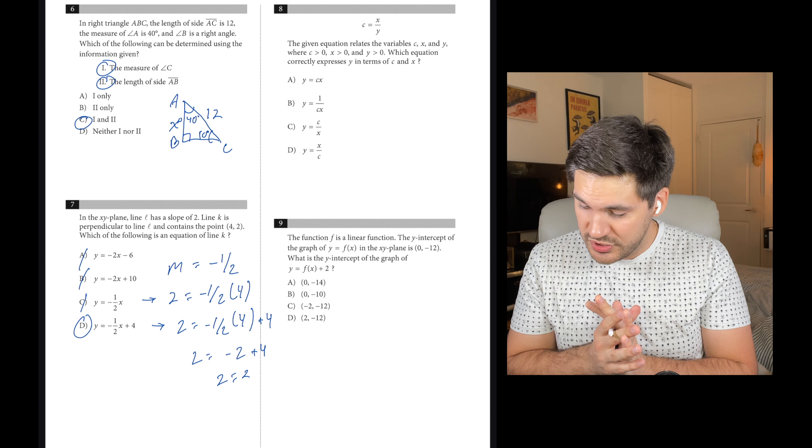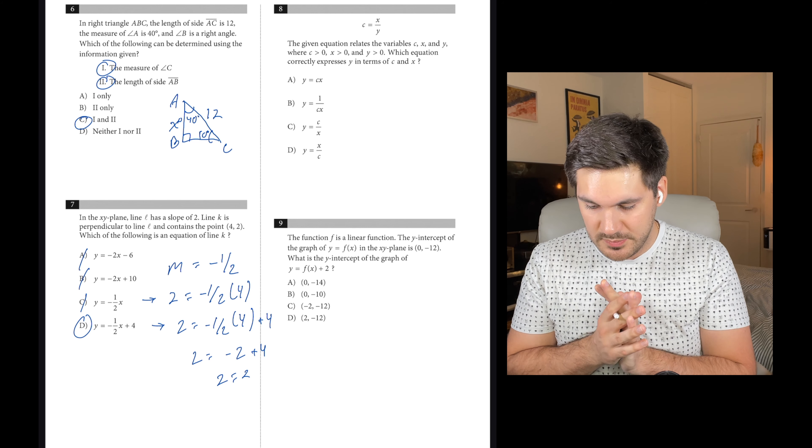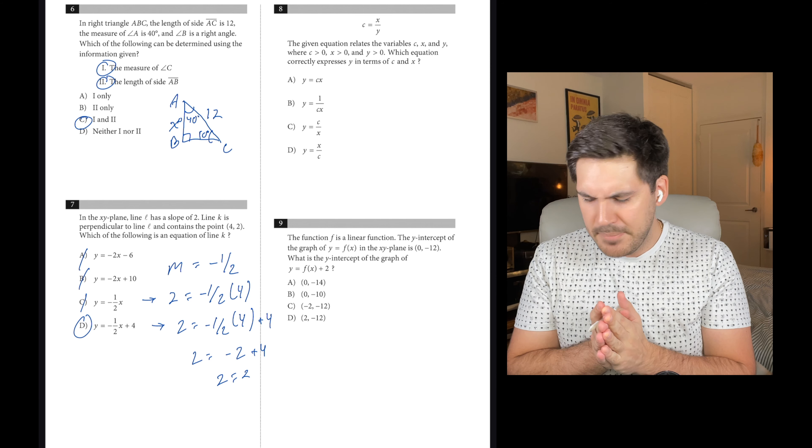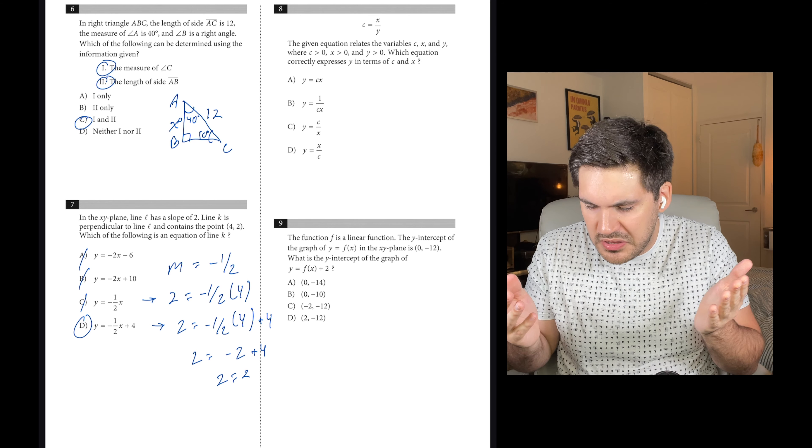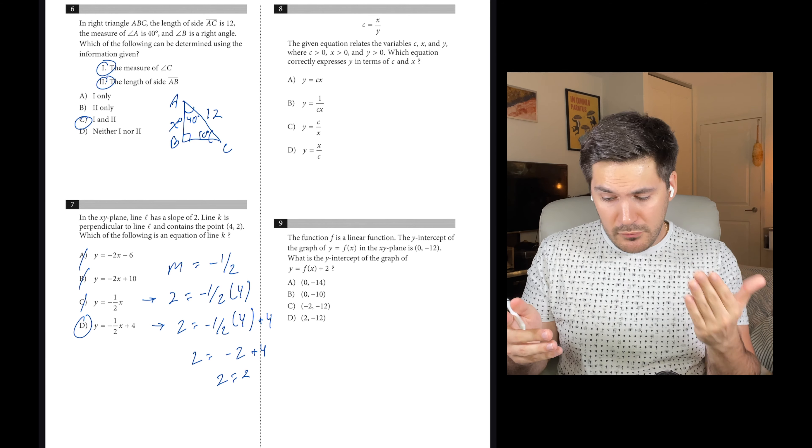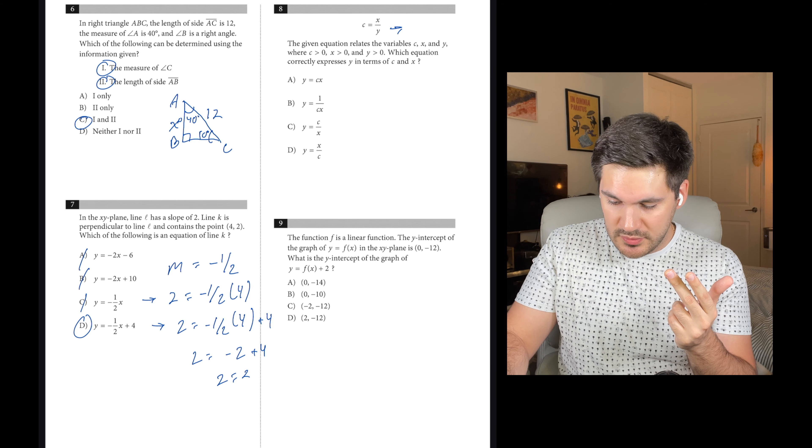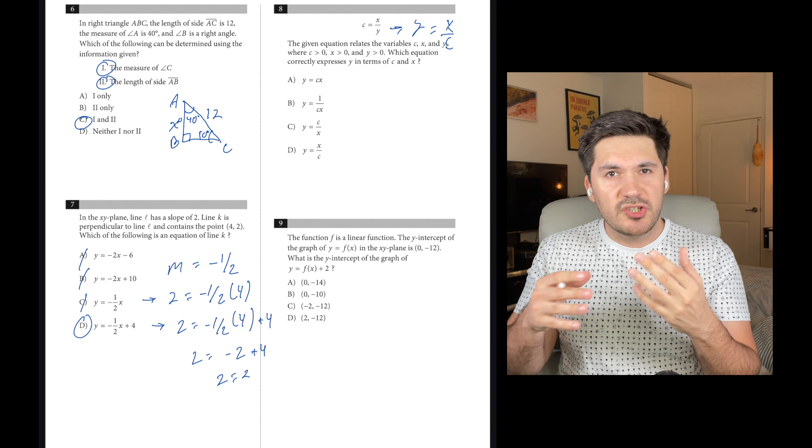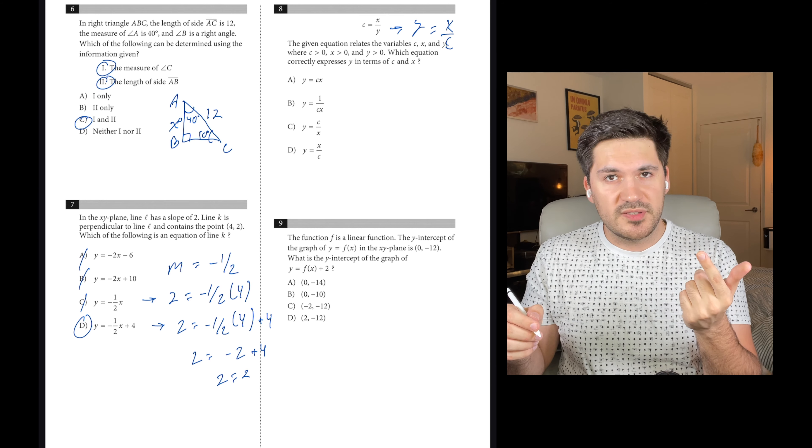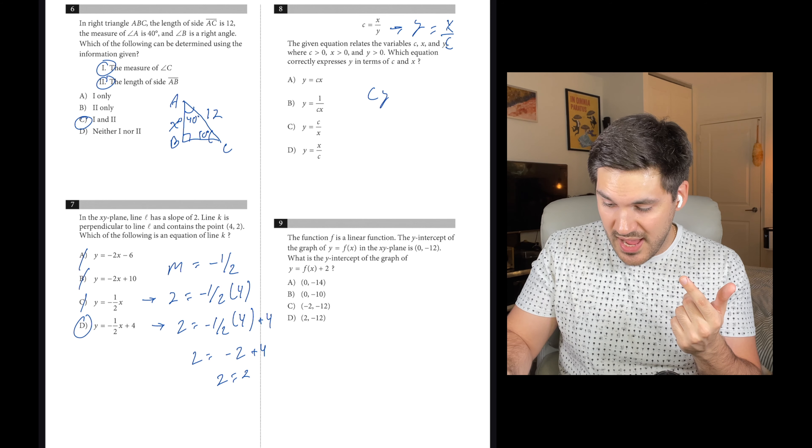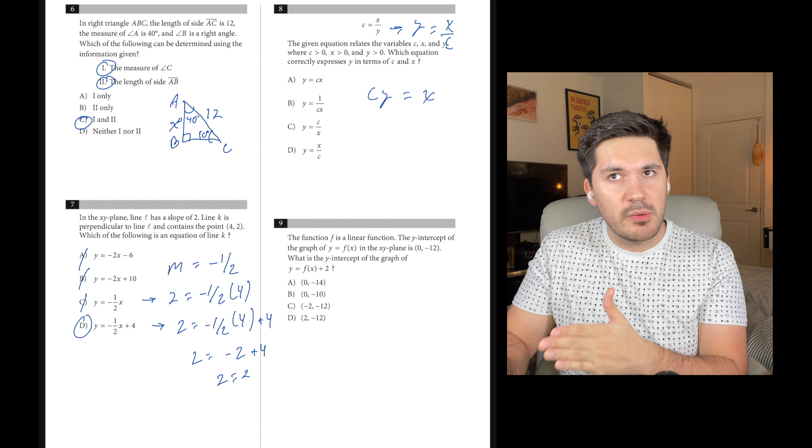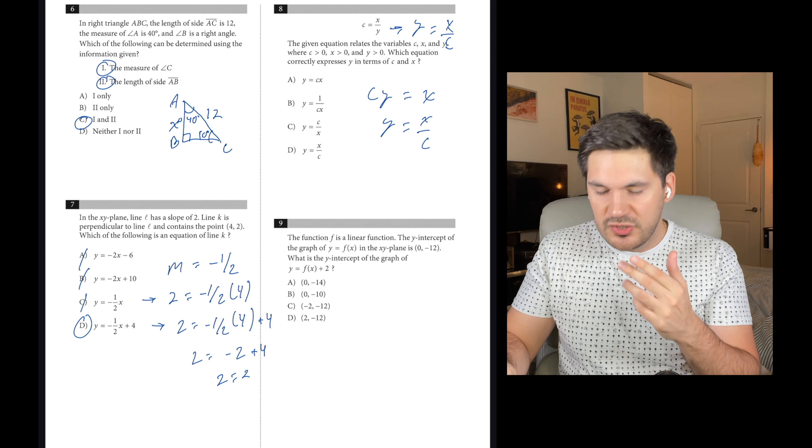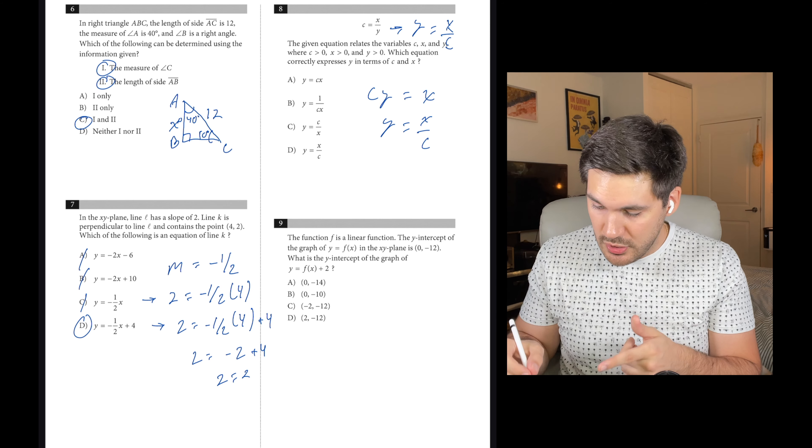Number eight, the given equation relates variables C, X, and Y, where C, X, and Y are all greater than zero. Which equation correctly expresses Y in terms of C and X? Basically, you're just solving the equation for Y. You might know right away that you can just flip C and Y in this scenario. So this is the same thing as Y equals X over C. But if you're not quite used to realizing that yet, just solve it out. Multiply both sides by Y, so CY equals X, then Y equals X over C. So that's D.